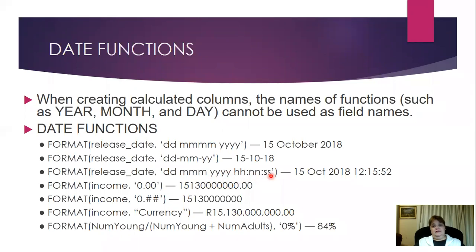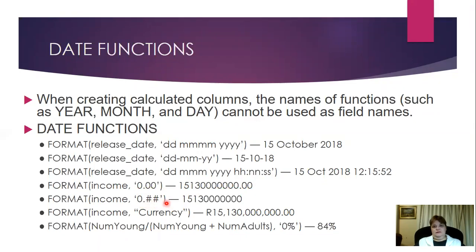For time, I add 'hh:nn:ss' — HH stands for hours, NN for minutes, and SS for seconds. If I'm working with income and would like to show decimals, I write '0.00' in quotation marks. If I don't want the decimal to show, I use '0.##' — in that way it won't display the decimal point.